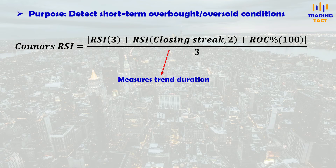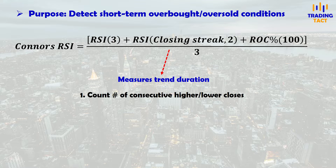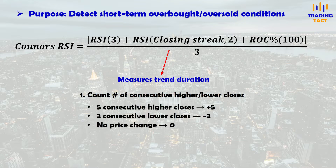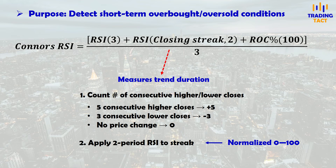The second component measures the trend duration. First, count the number of consecutive higher or lower closes. For example, if there are five consecutive higher closes, the streak is plus five. If there is no price change, the streak is reset to zero. Then apply the 2-period RSI to the closing streak to normalize the value from 0 to 100.